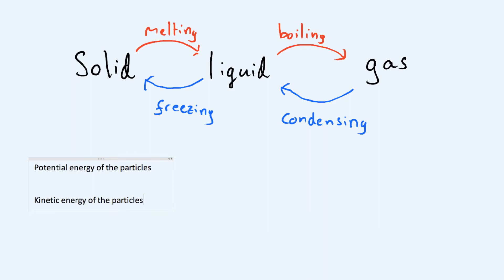Remember, if it's a solid the particles are vibrating; if it's a liquid or a gas, those particles are moving, which means they have kinetic energy. When heat is applied to the system, you increase the kinetic energy, and therefore your total energy increases. These two together — potential energy and kinetic energy — are the internal energy of your system.